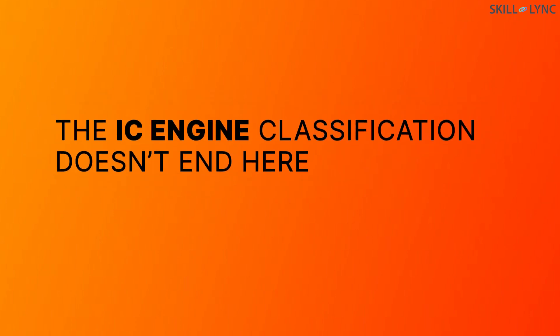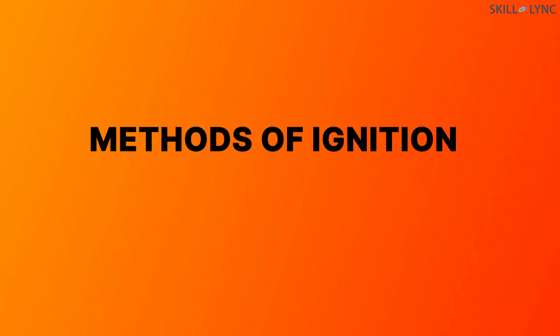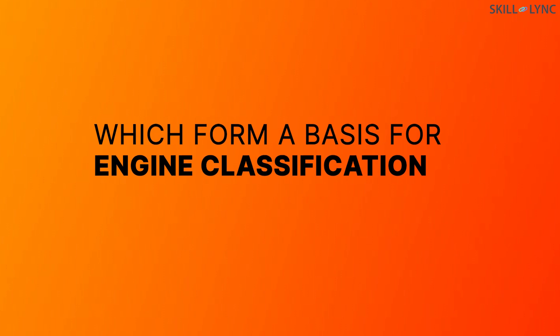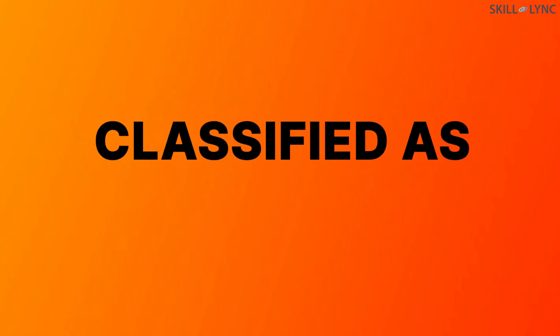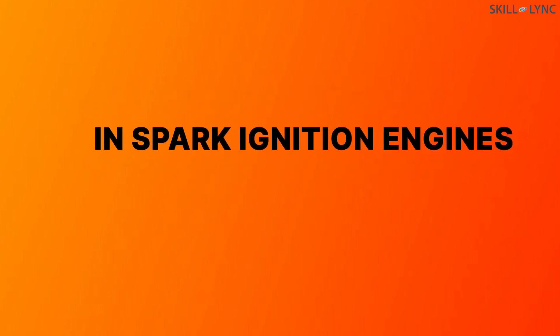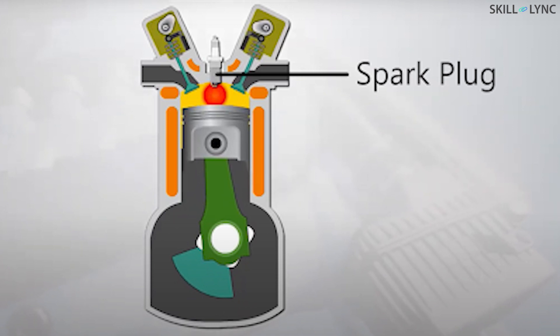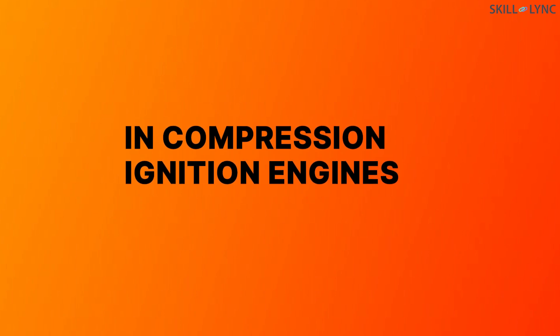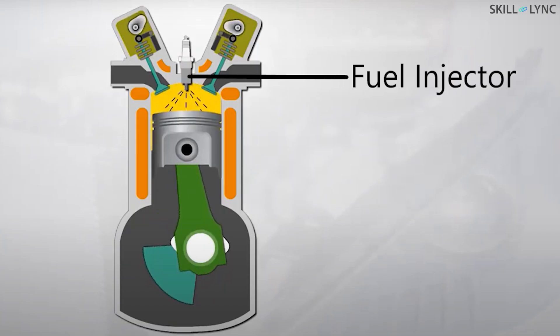The IC engine classification doesn't end here. Petrol engines and diesel engines use different methods of ignition, which form a basis for engine classification. Based on this, engines are classified as spark ignition engines and compression ignition engines. In an SI engine, a spark is provided to start the combustion of the air-fuel mixture with the help of a spark plug. In CI engines, fuel is sprayed on the highly compressed air inside the cylinder using a fuel injector, which initiates the combustion.